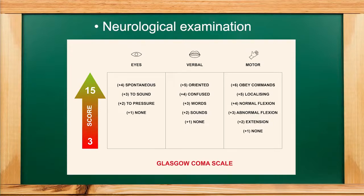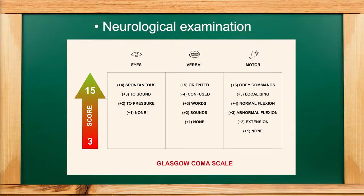The Glasgow Coma Scale assesses eye response, verbal response, and motor response, with a total score of 15. A score of 13 to 15 indicates mild injury or mild altered consciousness. A score of 9 to 12 indicates moderate impairment. A score of 3 to 8 indicates severe impairment. This gives us an idea of the patient's level of consciousness.